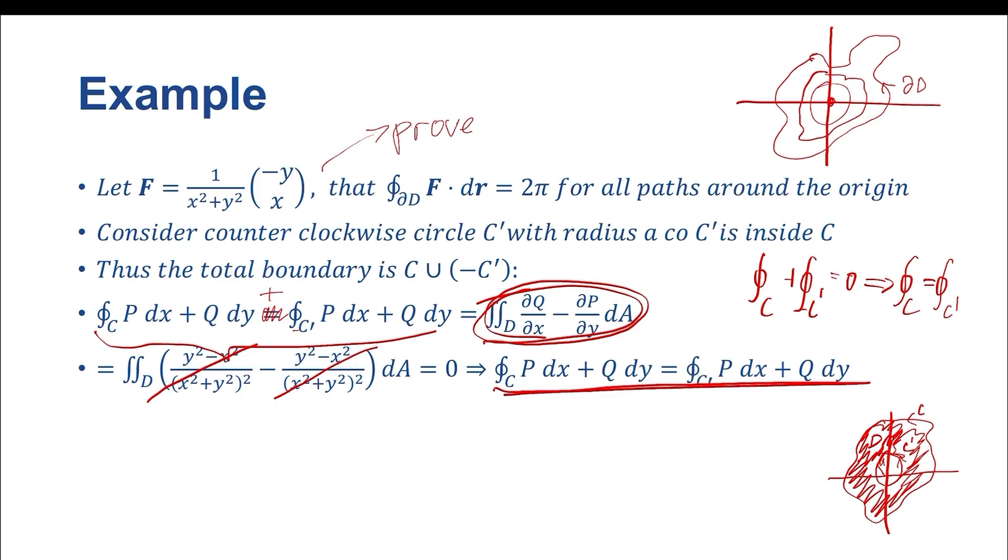Now what we're actually going to do is we're going to prove this. We chose our closed curve C' to be a small circle going counterclockwise with some radius A. Luckily for us, if we know how to do that, then we know how to do this.